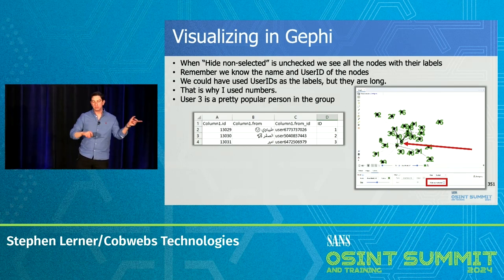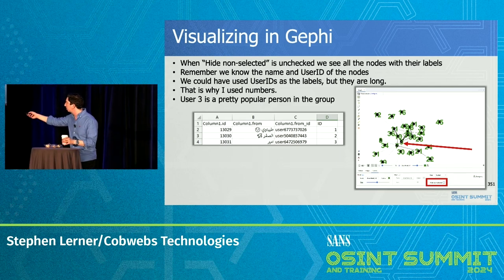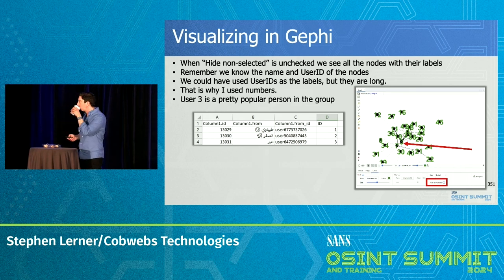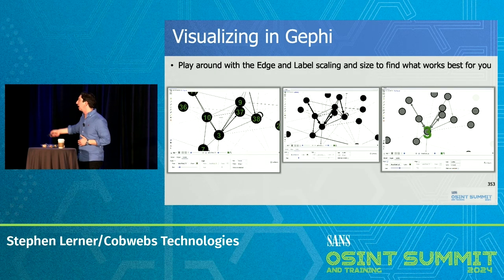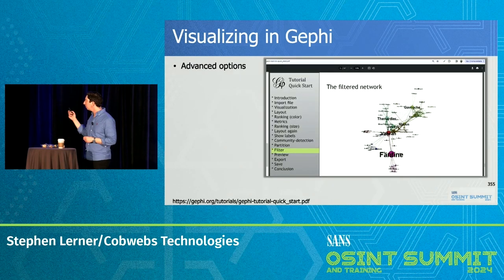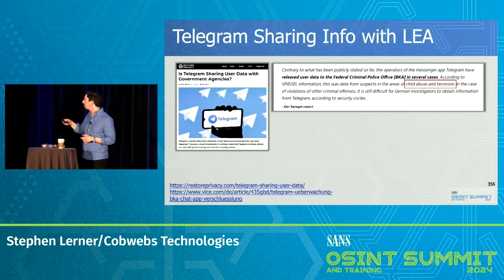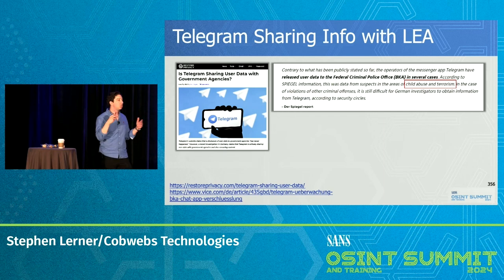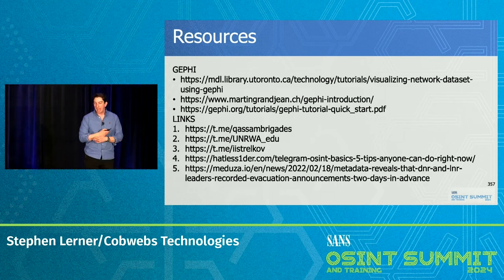Just making it pretty with 35 seconds left: play around with the edges and nodes. The strength and size of the arrows represent the strength of the relationship. Gephi has its own tutorial for creating different colors. Telegram, if you're law enforcement: apparently Telegram does help law enforcement in child abuse and terrorism cases — this is from the German Federal Police. Here are some resources, and that is it.